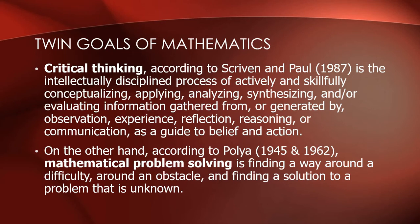There are two goals of mathematics — they are called twin goals because there are two of them. If you go back to the framework, they are seen at the core, at the center: critical thinking and mathematical problem solving. Critical thinking is defined by Scriven and Paul as the intellectually disciplined process of actively and skillfully conceptualizing, applying, analyzing, synthesizing, and evaluating information gathered from observation, experience, reflection,